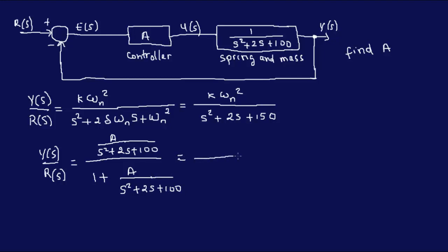So this would be A over s squared plus 2s plus... So I'm gonna multiply this out. I have s squared plus 2s plus 100 plus A over s squared plus 2s plus 100.